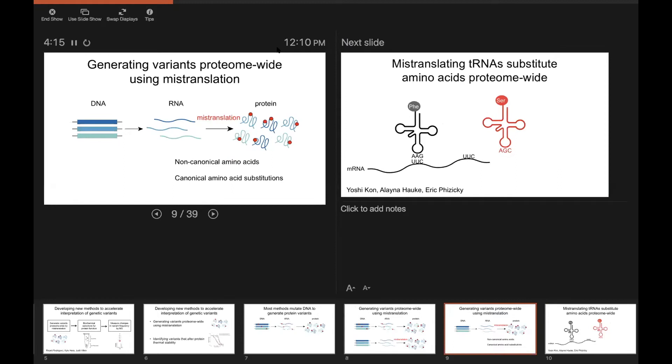But Kyle Hess has a poster here today about that. So I encourage you to visit his poster. What I'm going to talk about is some of the work I've done in order to engineer canonical amino acid substitutions. So one natural amino acid for another mimicking genetically encoded missense mutations.